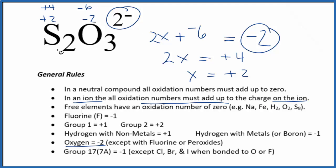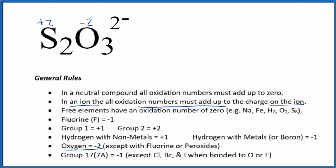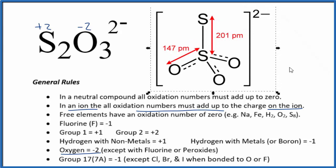Let's take a look at the structure of the thiosulfate ion. What you'll notice is that the sulfurs are very different. This sulfur is not bonded to any oxygens. This sulfur is bonded to these three oxygens here.